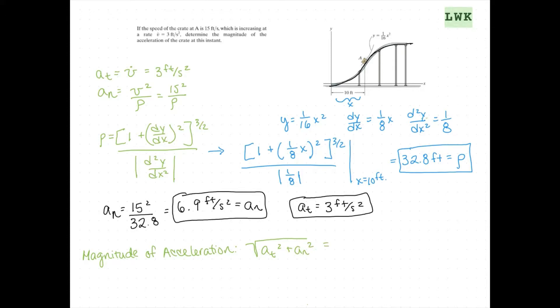And plugging in for that will give us 3 squared plus 6.9 squared, and that will give us an acceleration of 7.5 feet per second squared.